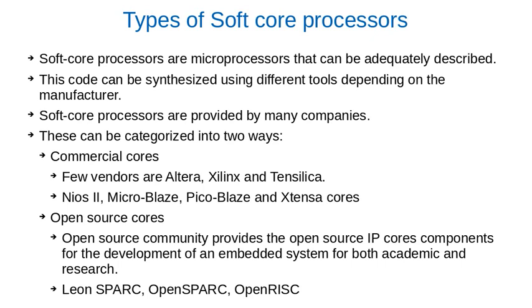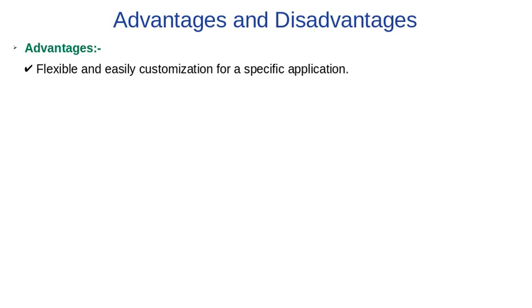We will learn about how we can program these cores and what are the different tools required to program them. Now, there are some advantages and disadvantages of using these soft core processors to develop an embedded system. First, we will discuss some advantages. Soft core processors are flexible and easily customizable for a specific application. We can change the soft core processor according to our application.